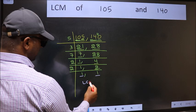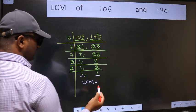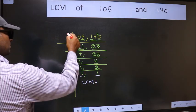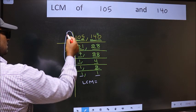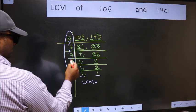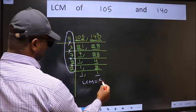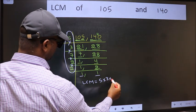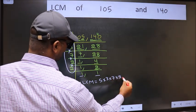So our LCM is the product of these numbers. That is 5 into 3 into 7 into 2 into 2.